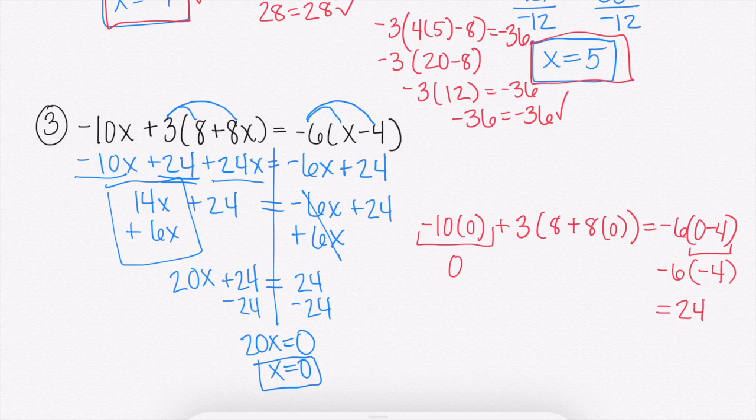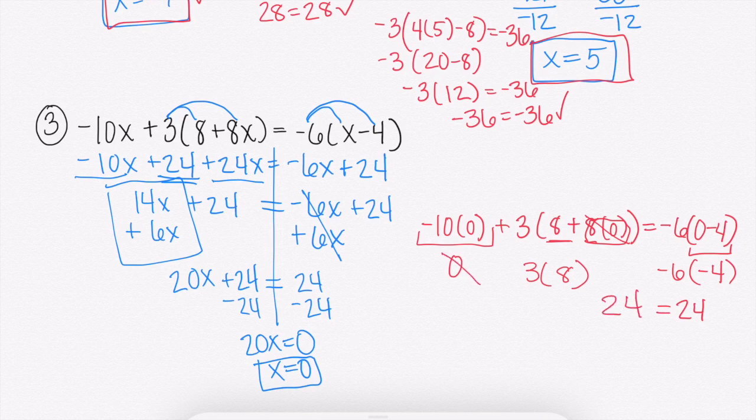And our parentheses here, that's going to just cancel to get 0. So we have 3 times, really it's just 8. That's 0, so that's gone. So 3 times 8, 24. It did work out. We got the same thing on both sides, so that means our answer of x equals 0 is correct.